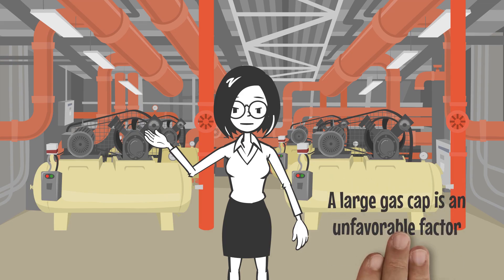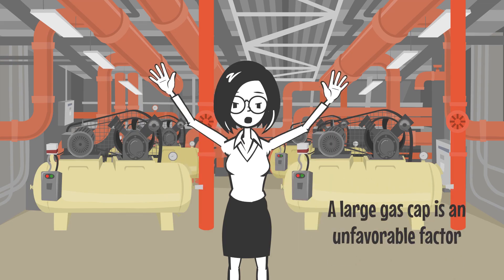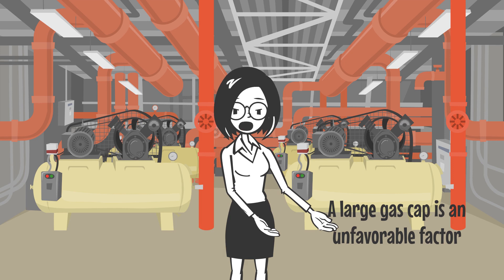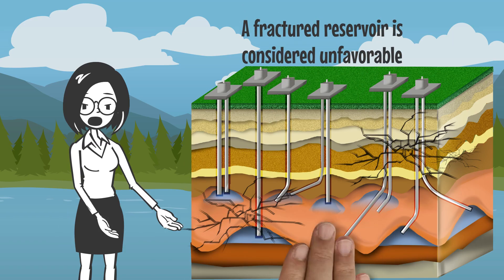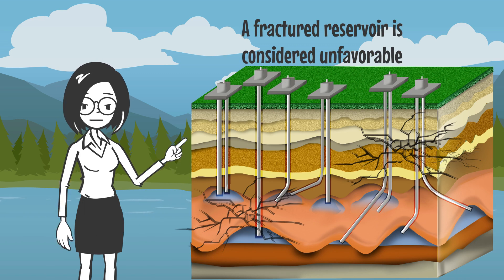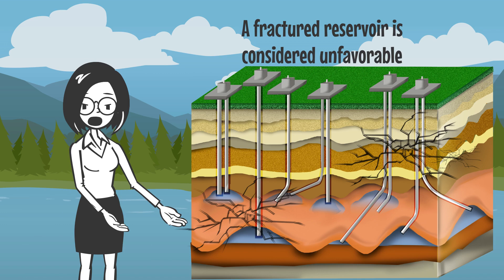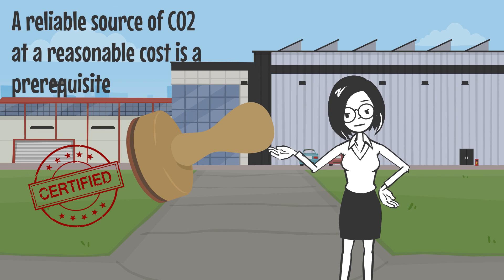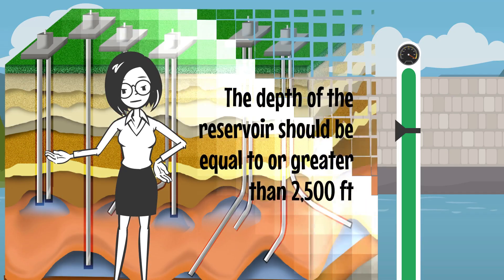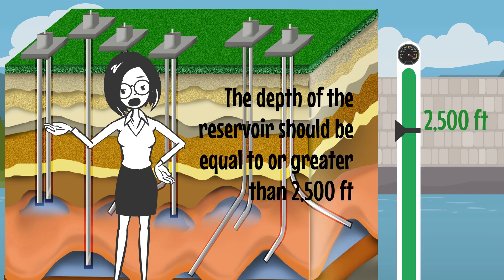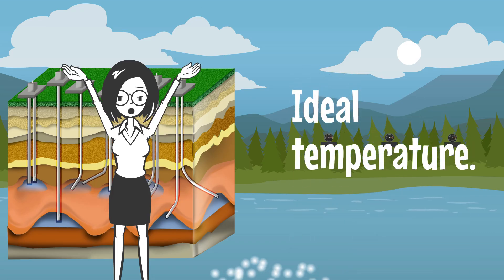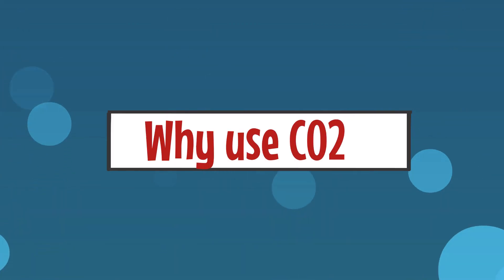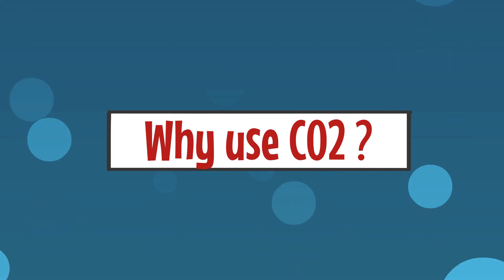There are certain criteria to consider before CO2 injection is applied. First, a large gas cap is unfavorable — if reservoir pressure is considerably lower than miscibility pressure, a large volume of CO2 is needed. Second, a fractured reservoir is unfavorable because it provides a conduit from injection to producing well. Third, a reliable source of CO2 at a reasonable cost is a prerequisite. Fourth, the depth of the reservoir should be equal to or greater than 2,500 feet. Finally, temperature is also an essential factor.